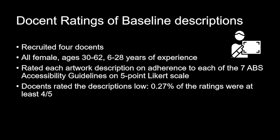We had docents rate these baseline descriptions curated from the Mechanical Turkers. We recruited four docents — all female, ages 30 to 62, with six to 28 years of experience. They rated each description on adherence to each of the seven ABS accessibility guidelines on a five-point Likert scale, where one was poor and five was best. The quality was incredibly low: only 0.27% of ratings were at least a four out of five, so we realized we had to do more work to improve the accessibility descriptions.